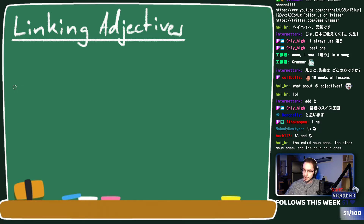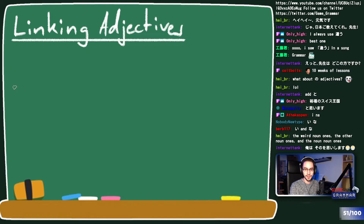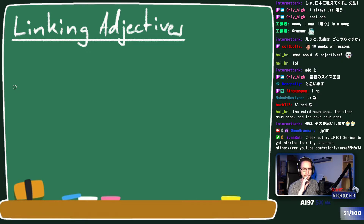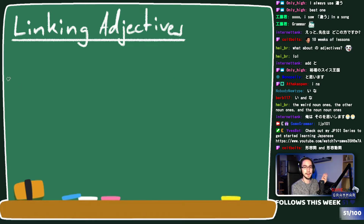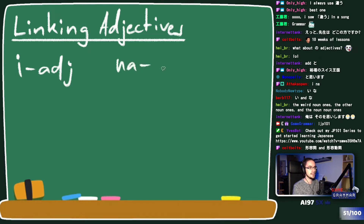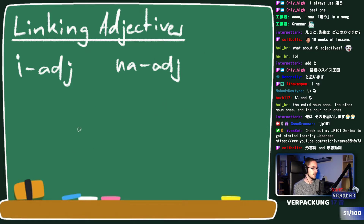For those of you who don't know this, don't worry - I have made a lesson about it in this playlist. The Japanese names are keiyoshi and keiyodoshi, which I discuss in the video, but the English names 'i-adjective' and 'na-adjective' describe them fairly nicely. I-adjectives always end in 'i' and na-adjectives require 'na' in front of nouns.